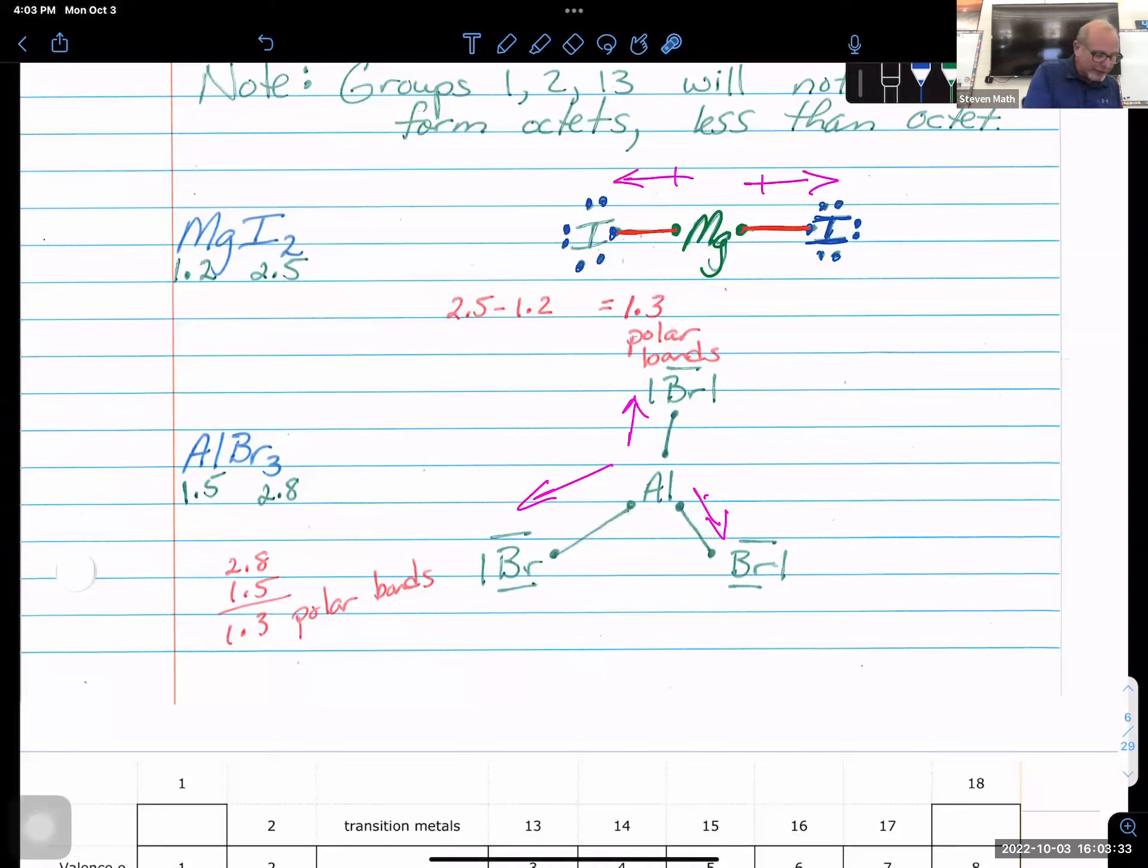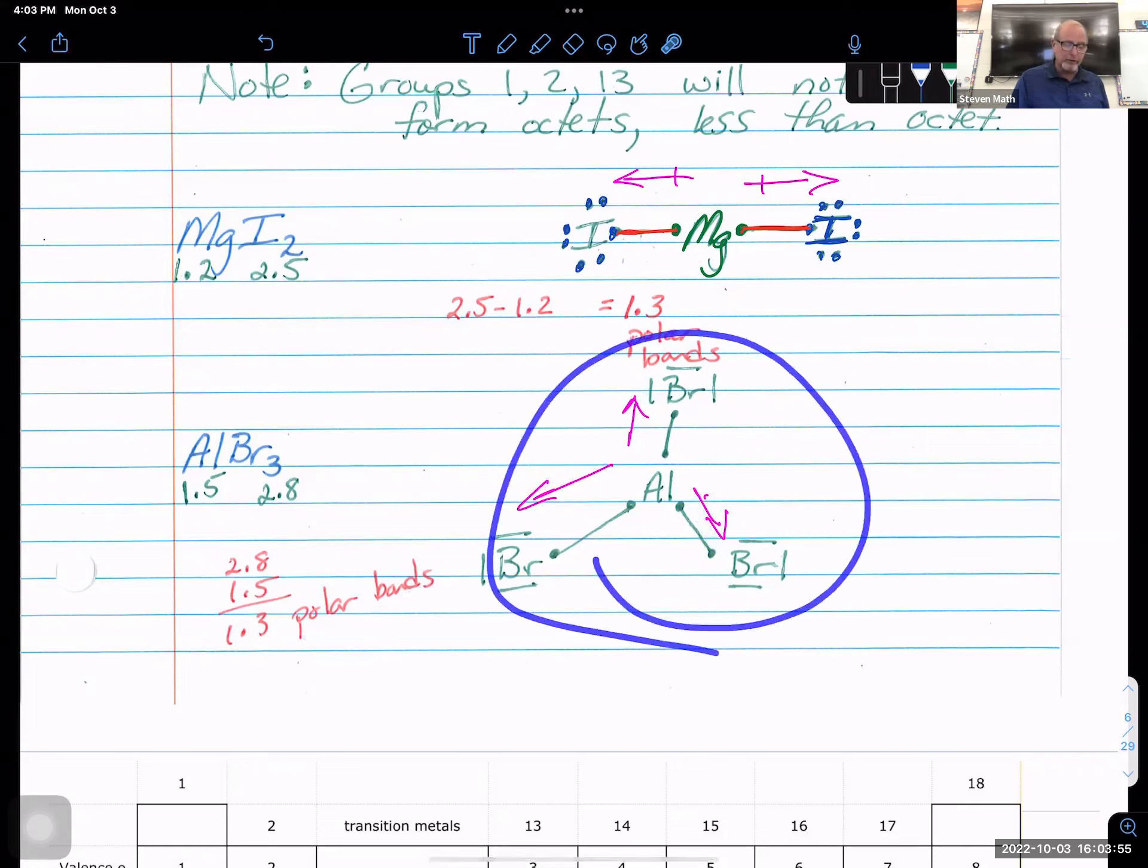But bromine, 2.8. It's pretty electronegative. It's pulling on those aluminum electrons. It's pulling those aluminum electrons away from the central atom. So you have polar bonds. Beautiful Lewis structure.